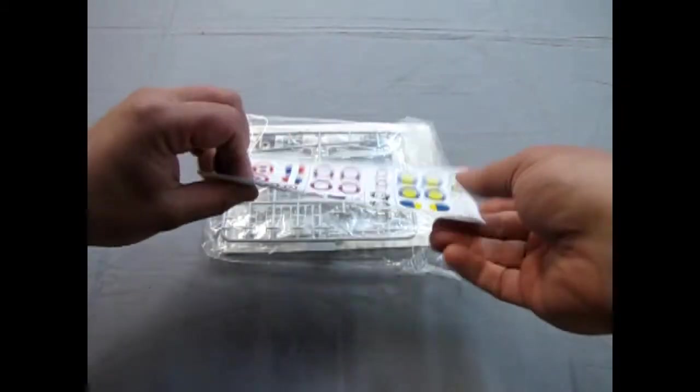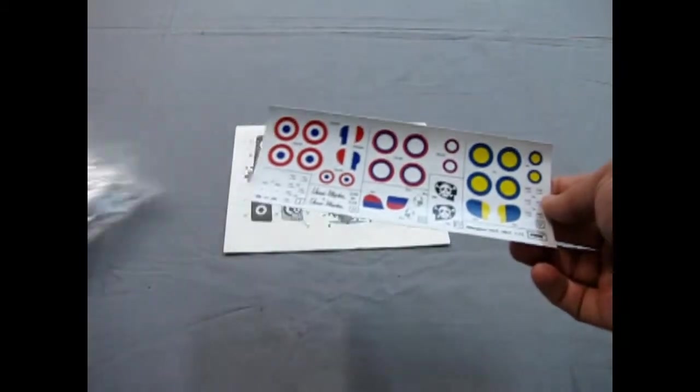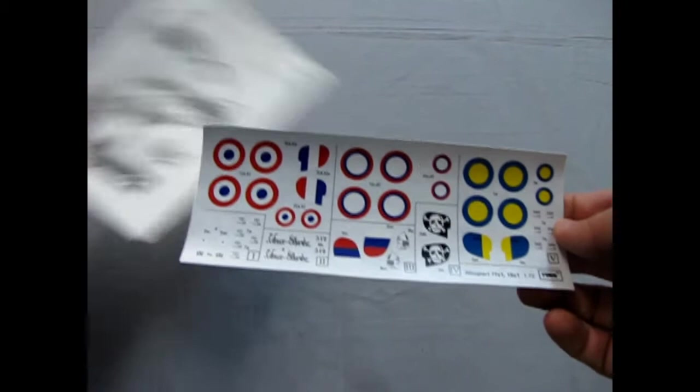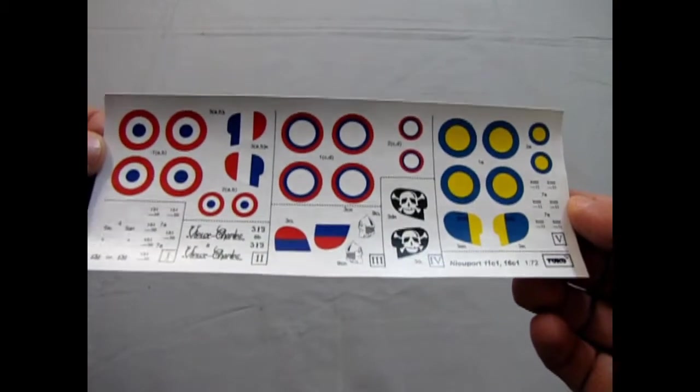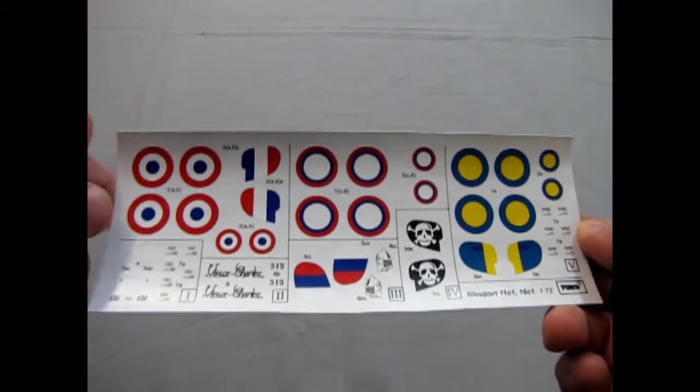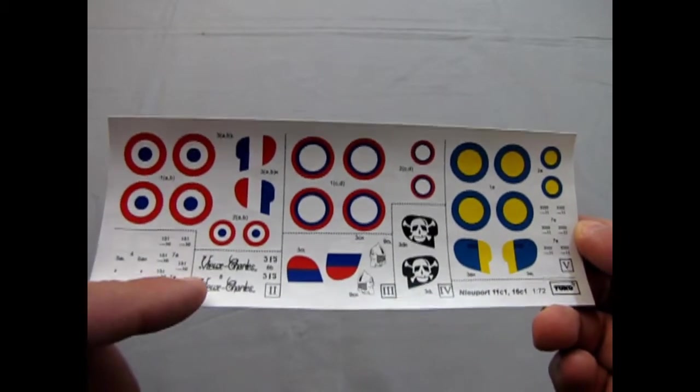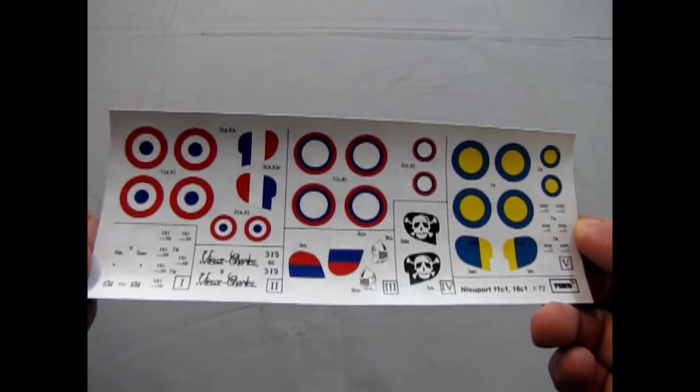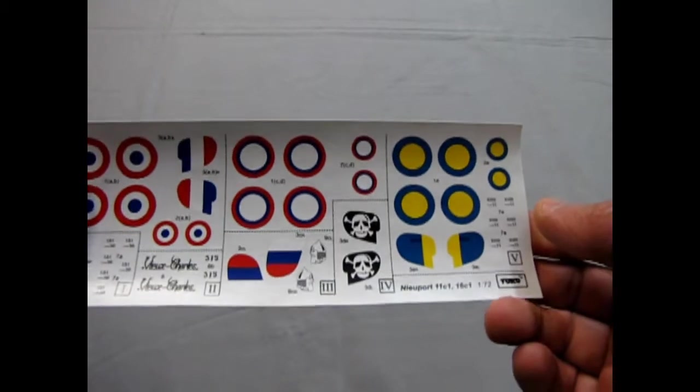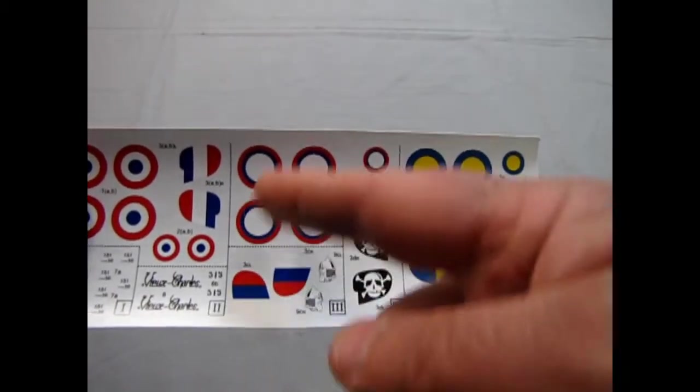Now, speaking of decals to start with, which is a change. I usually look at the instructions first. But here we have the French Newport by Avie Charles, the old one. And there's the markings here for the Russian one.